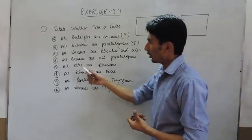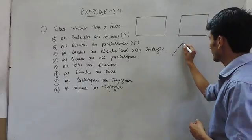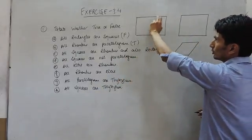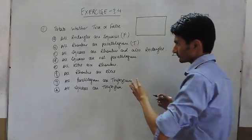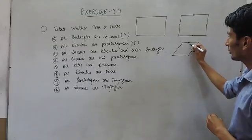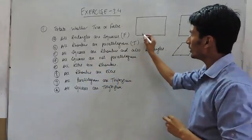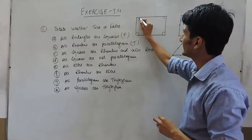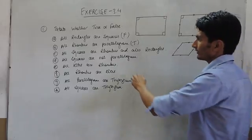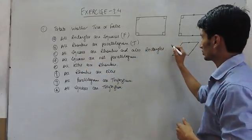In the third statement, all squares are rhombuses and also are rectangles. We know that a rhombus is a figure whose all sides are equal and a rectangle is a figure whose opposite sides are equal. A square can be a rhombus because in a square all sides are equal and in a rhombus all sides are equal. When comparing a square to a rectangle, all angles in a rectangle are 90° and all angles in a square are also 90°. So we can say that all squares can be a rhombus and all squares can also be rectangles. So this statement is true.